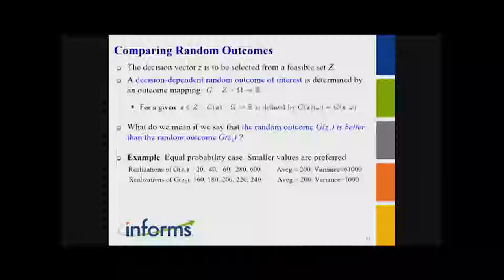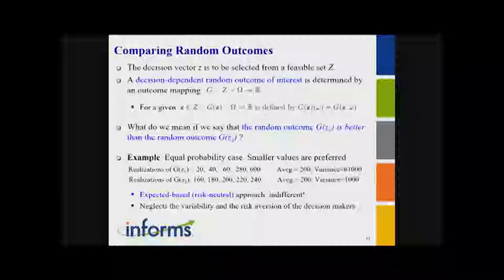Maybe you'll calculate the average — in this small example, they have the same average value. If I follow the expectation-based approach, I'll be indifferent between these two decisions, but we are neglecting variability and risk aversion. Maybe you're very conservative and cautious about the largest possible value — for you, the second option is a clear winner. Or maybe you'd consider a subset of the larger realizations and take the average over a selected set of observations — this is basically related to the famous Conditional Value at Risk risk measure.